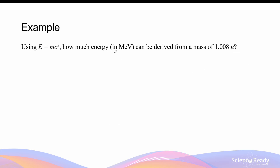How much energy in mega electron volts can be derived from a mass of 1.008 atomic mass units? Mega electron volts is a million electron volts — mega is equivalent to 1 million.